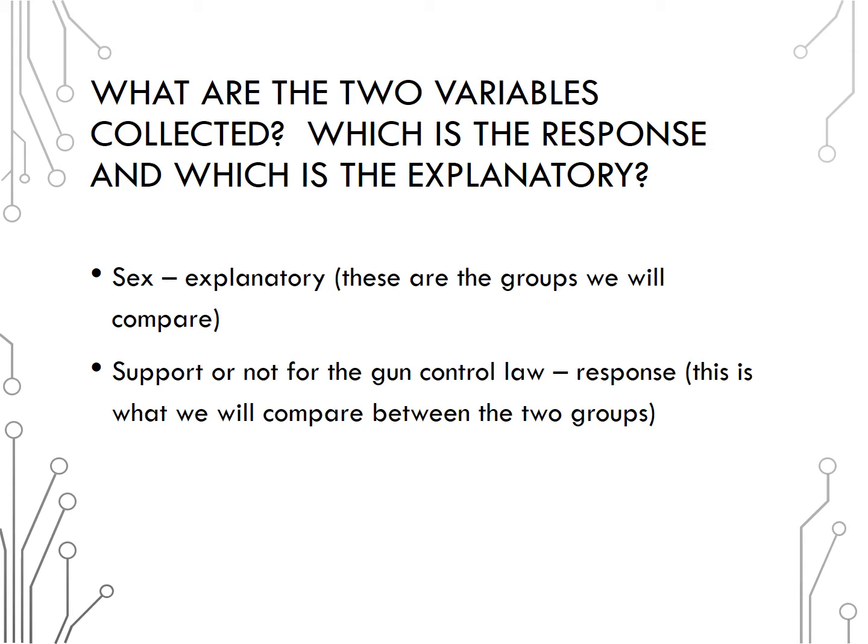What are the two variables collected? Sex is one, men or women, and it is the explanatory variable. These are the groups we will compare. Support or not for the gun control law is the other variable collected. It would be the response. This is what we will compare between the two groups. Be sure to think about the observational unit, one person, when identifying your variables.